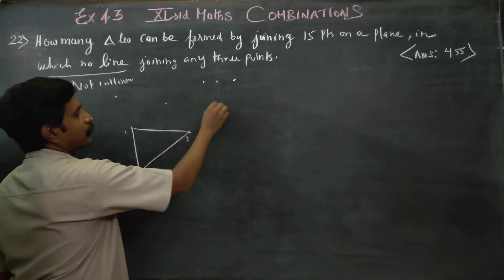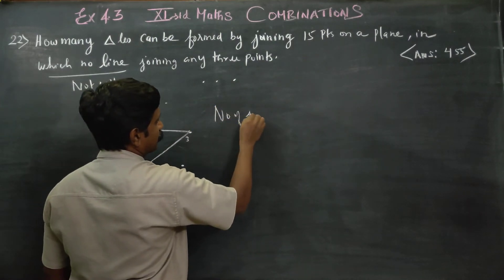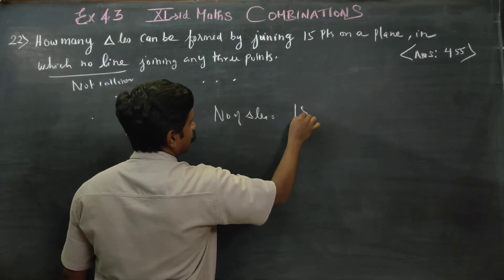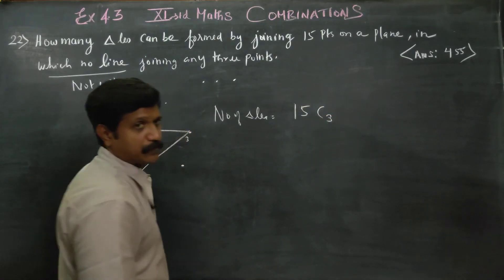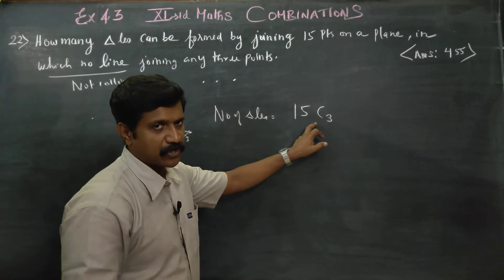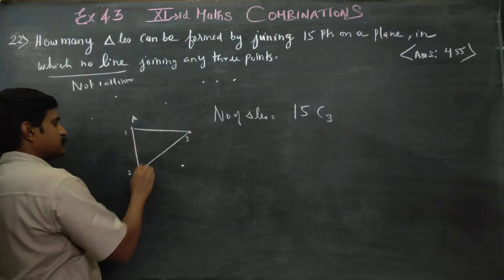Number of triangles is equal to... out of 15 points, you have to just choose three points. Why combination? Not permutation.